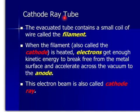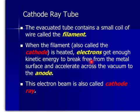The cathode ray tube is an evacuated tube, which means most of the air in the tube has been pumped out. It contains a small coil of wire called the filament, also called the cathode. When the filament is heated, electrons gain enough kinetic energy to break free from the metal surface and accelerate across the vacuum to the anode. This electron beam, or electron current, is also called cathode ray.